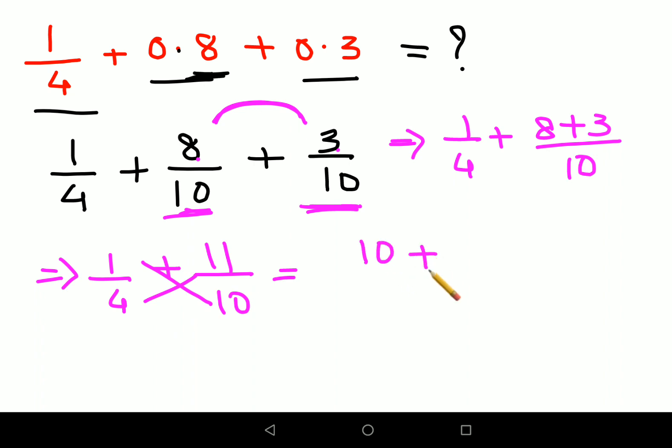You directly cross multiply since there are just two fractions. It's easier. So you will have 10, 1 into 10 gets you 10, plus 4 into 11 gets you 44. Now in this case here the denominator gets multiplied.